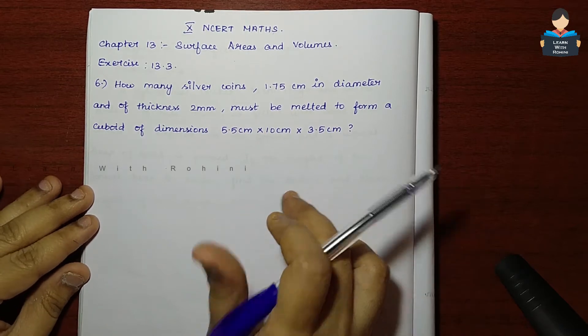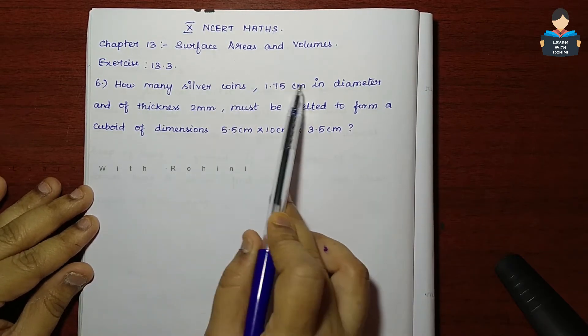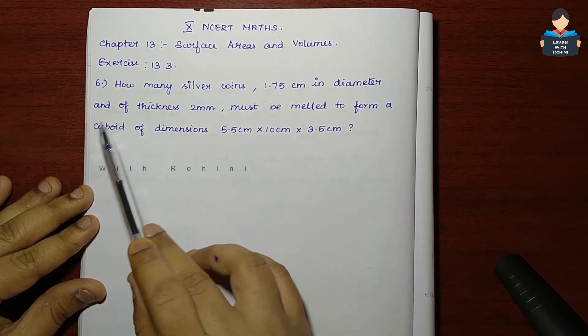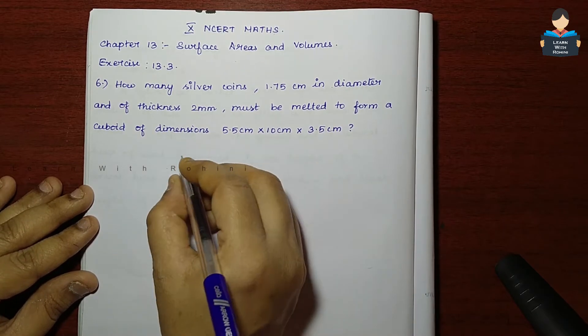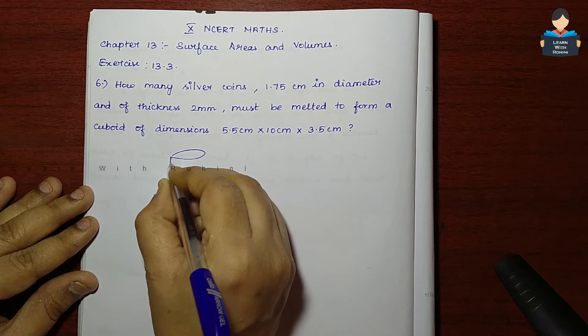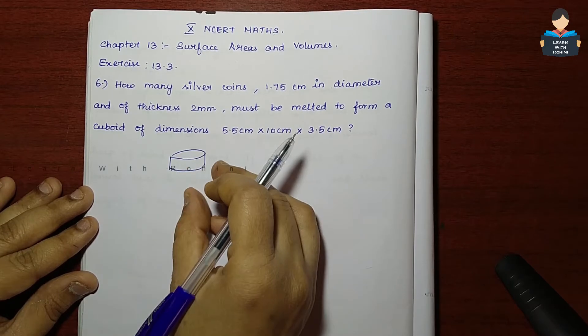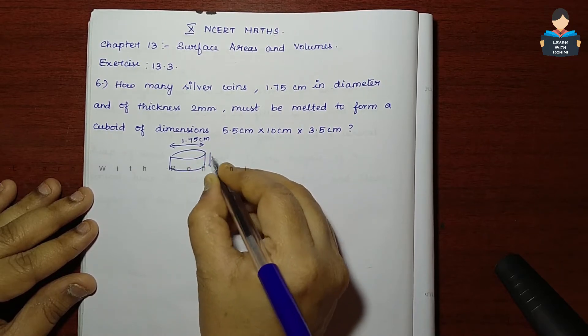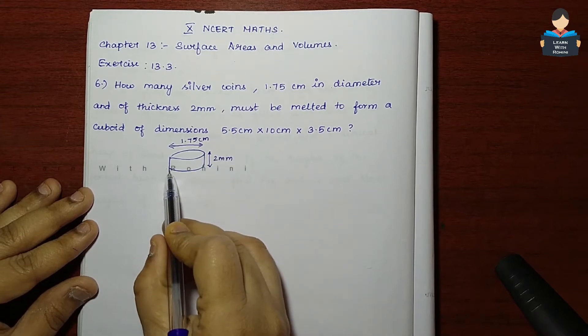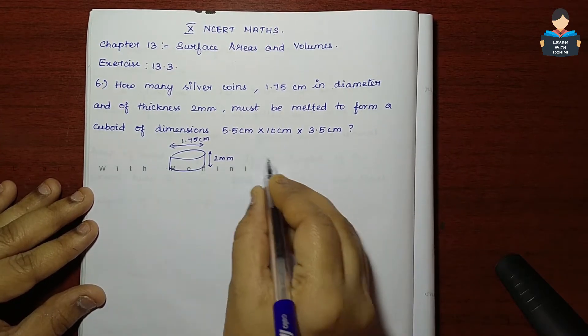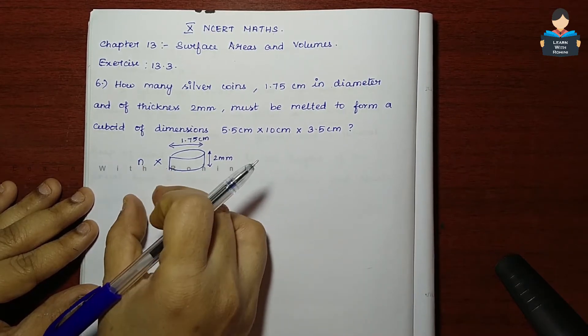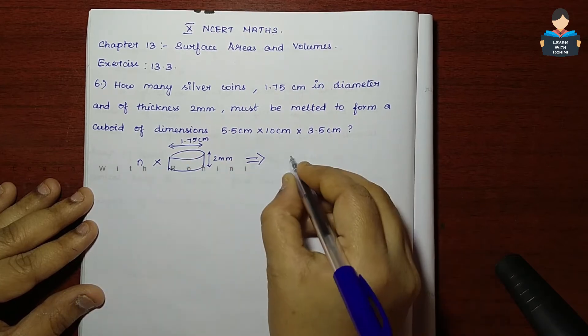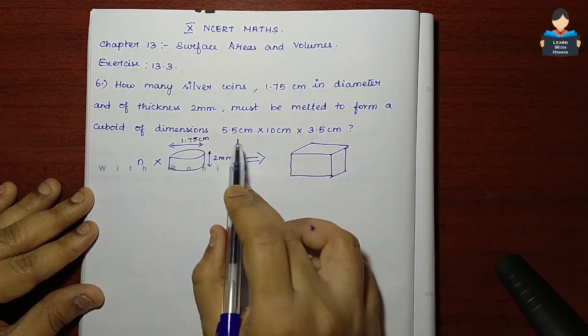How many silver coins 1.75 cm diameter must be melted to form a cuboid? This silver coin has diameter 1.75 cm and thickness 2 mm. How many such silver coins must be melted together?